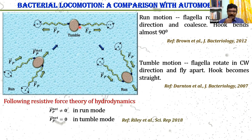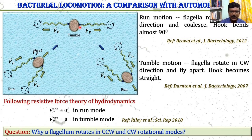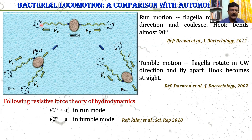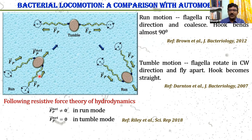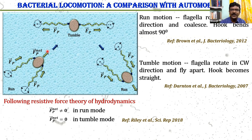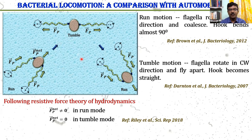The run and tumble modes can be explained by the simple resistive force theory of hydrodynamics. According to the resistive force theory, if a cylindrical helical filament rotates, then a propulsive force is generated, acting along the rotational axis of the filament. As the hook bends, a net propulsive force acts and helps the bacterium move forward. However, in the tumble mode, this propulsive force acts in different directions, and there is no net propulsive force.